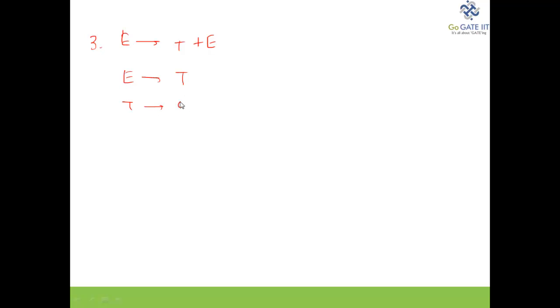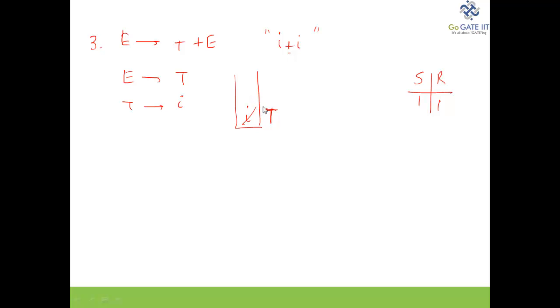Now let us consider one more example to make the concepts clear. The grammar is: E → T plus E, E → T, and T → I. The input string is 'I plus I'. We push I — one shift action — then reduce I to T. Now the compiler gets confused: should it reduce T to E, or should it shift the plus symbol onto the stack? This is a shift and reduce conflict happening simultaneously — this is called an SR conflict.